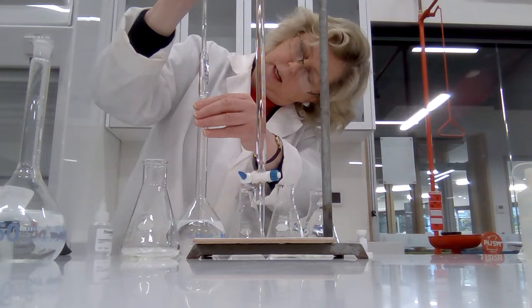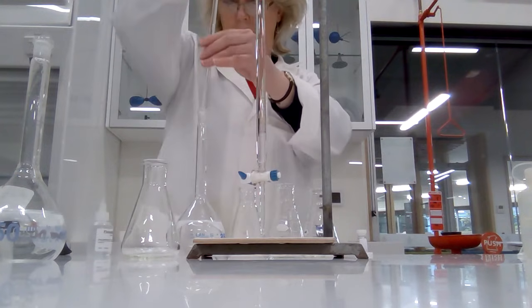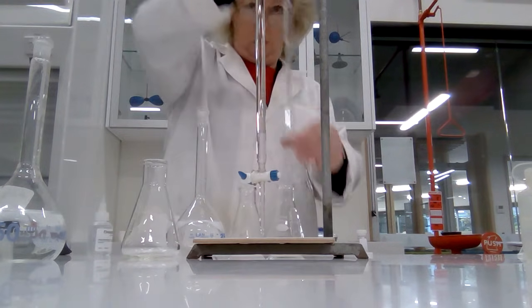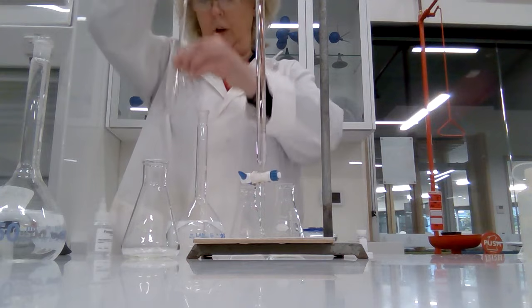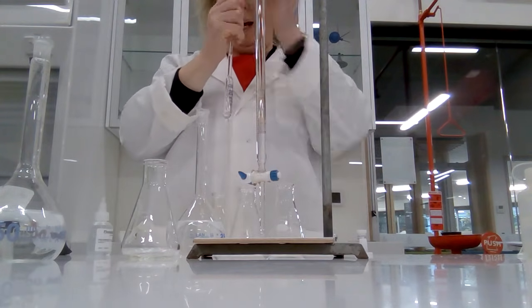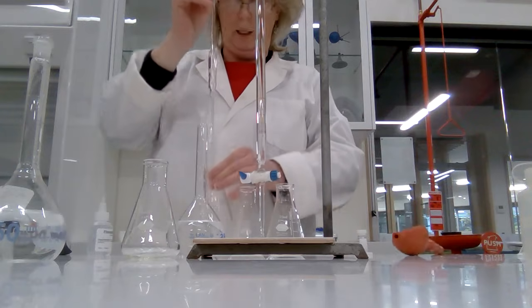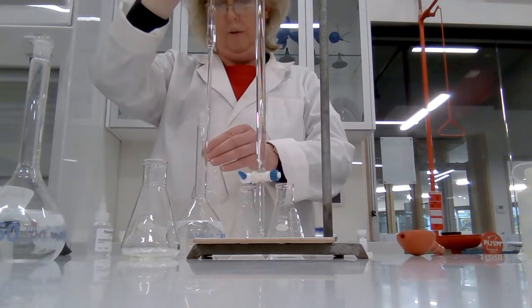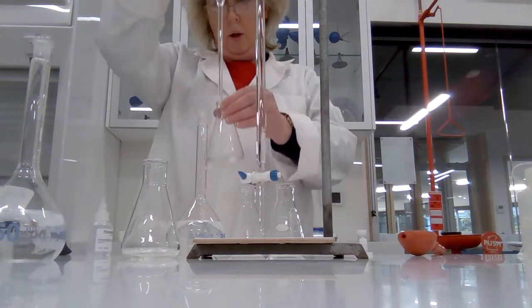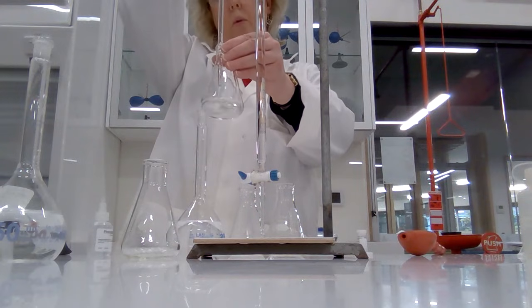And then you transfer to your volumetric conical flask. I like to do it by taking the end of the filler off the pipette and just letting it drain. So we now have three flasks, each with 20 milliliters of oxalic acid.